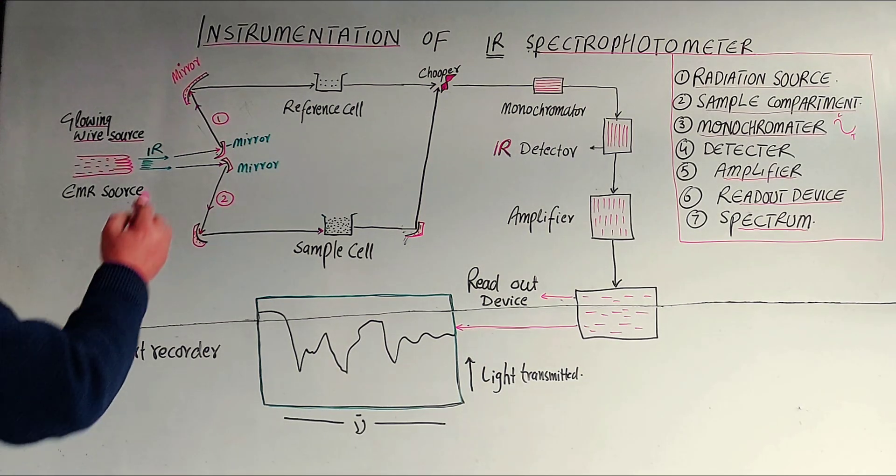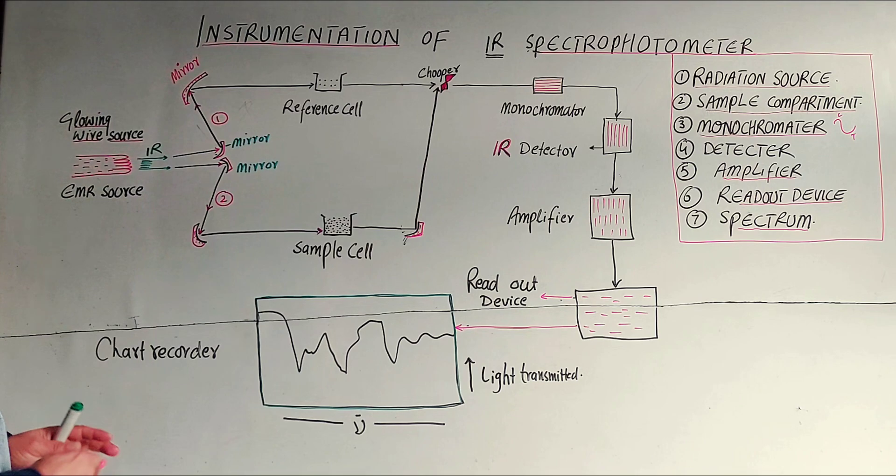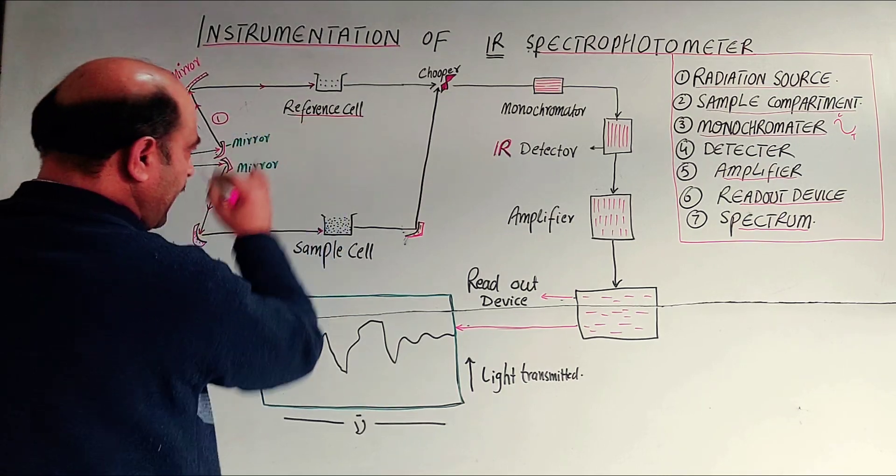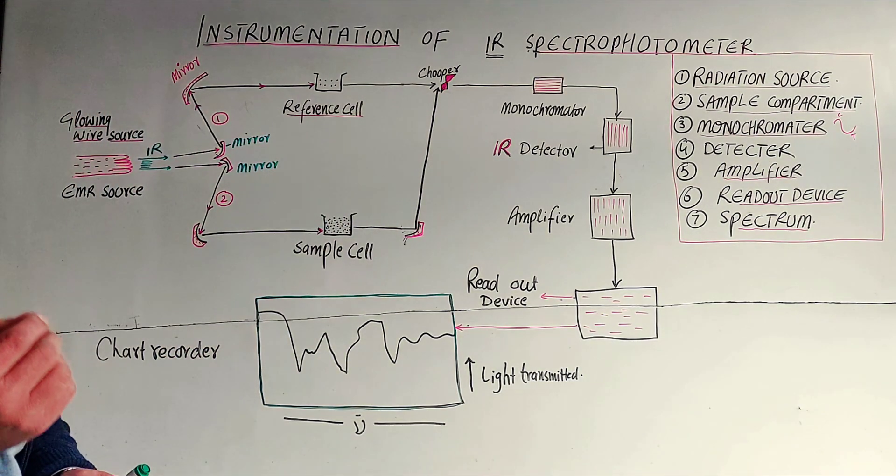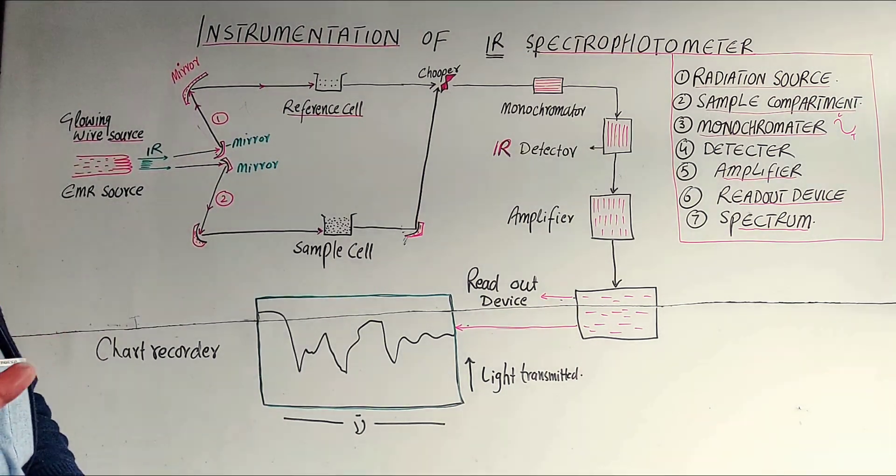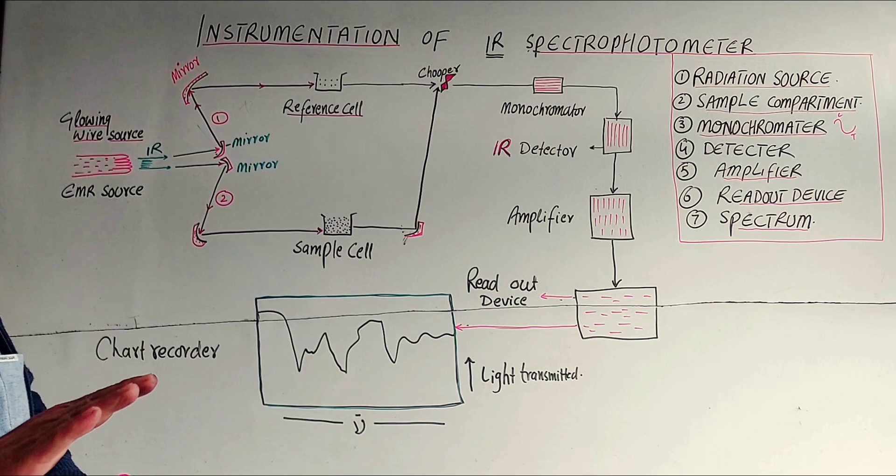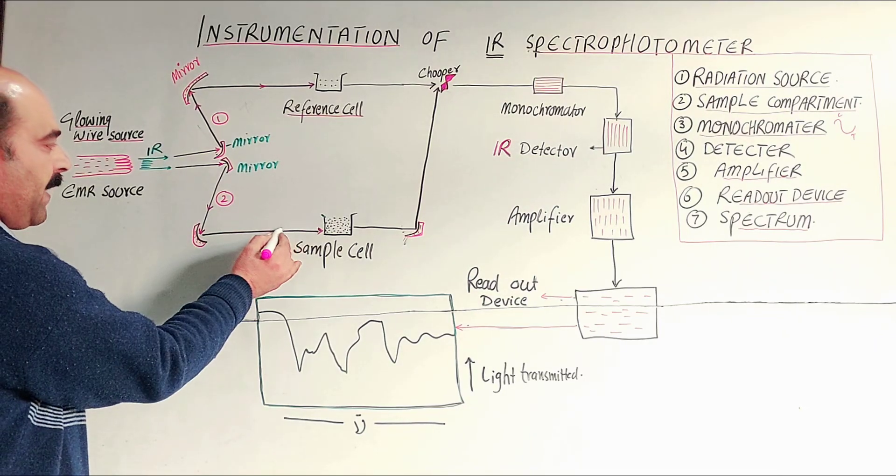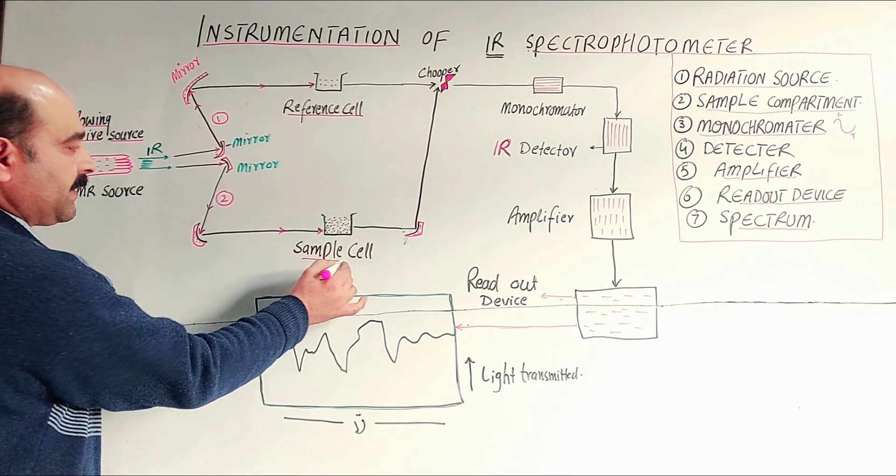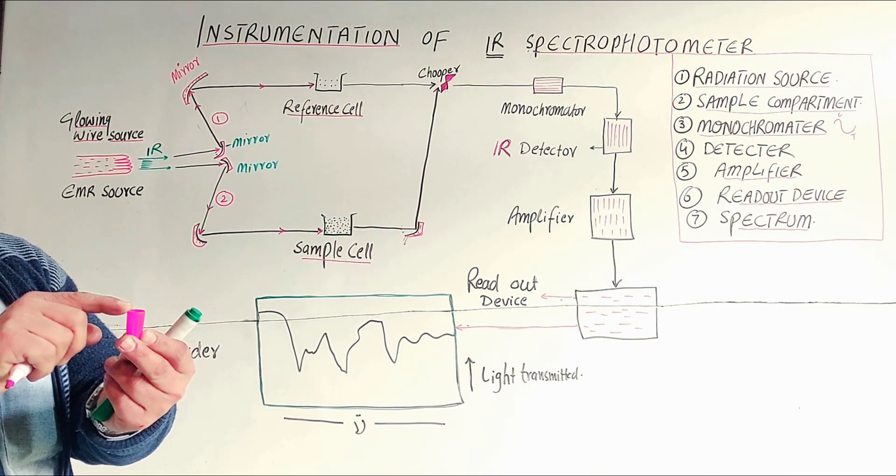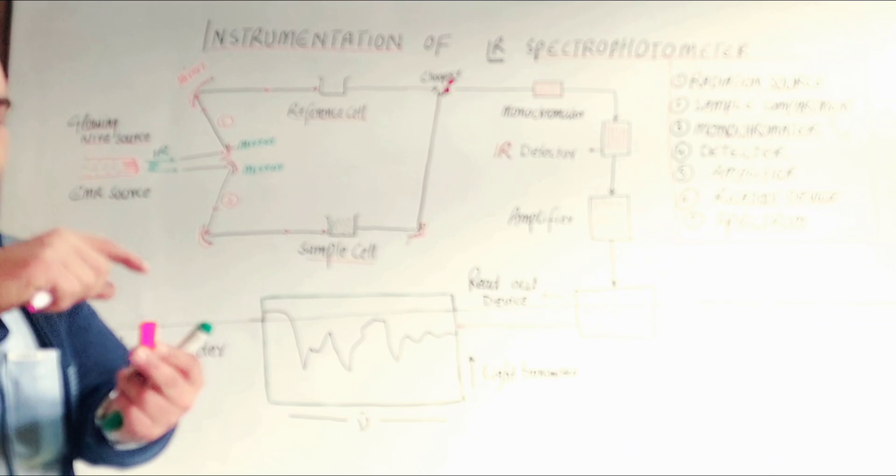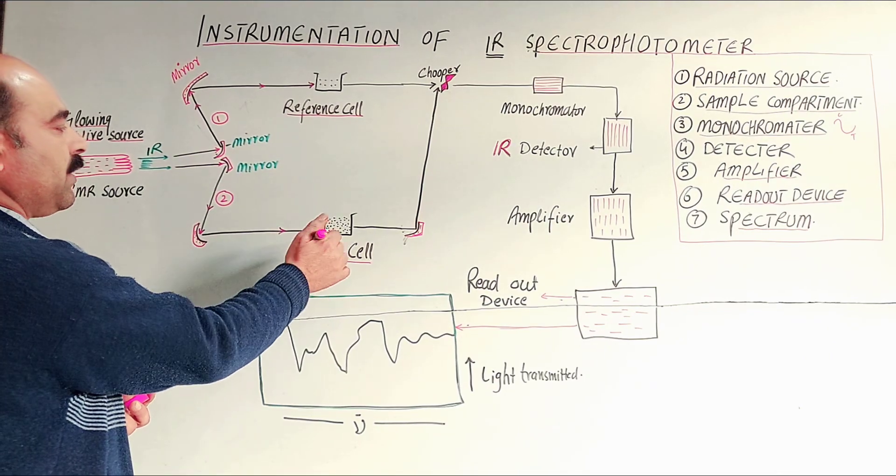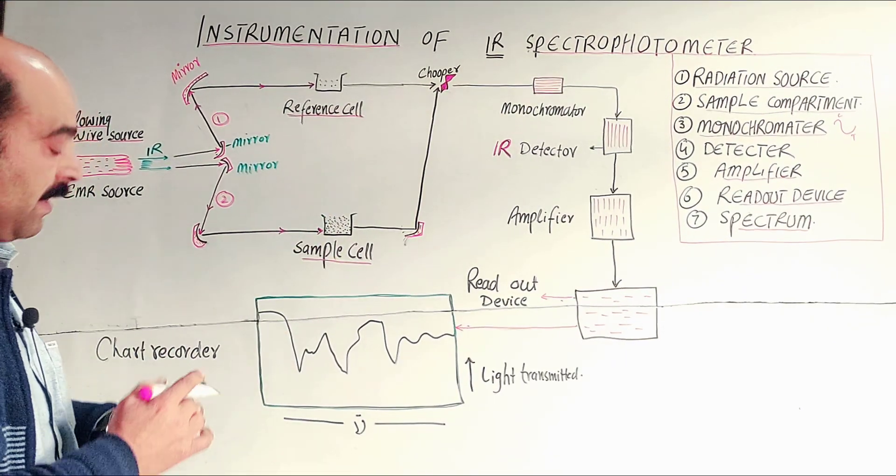If you have a mirror, one beam reflects to the reference cell. It's a blank tube or simply a solvent that doesn't have a solute, not an organic compound - it's a reference cell. The other beam goes to the sample cell. If you have a sample cell with a solution, IR radiation passes through the sample cell or solution.